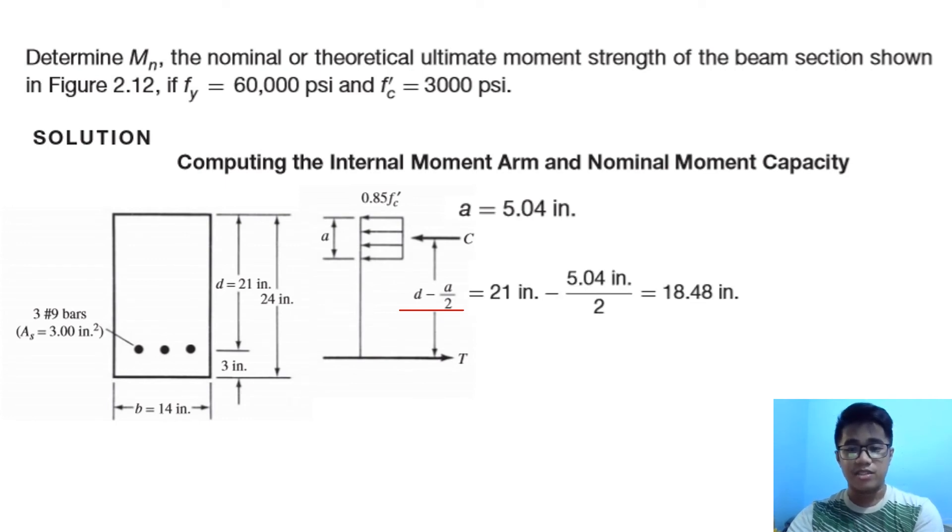It's 21 inches minus 5.04 divided by 2, so that moment arm is 18.48 inches. Therefore, our nominal moment is 180 kips—our tension force—but obviously the tension force equals our compression force since we made it an equilibrium. So 180 kips multiplied by that distance gives us our nominal moment: 3326.4 inch-kips, or 277.2 foot-kips.